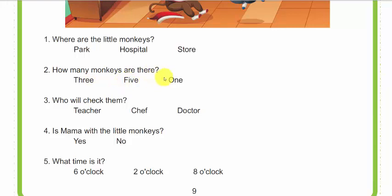Number three: Who will check them? Teacher, chef, or doctor? Number four: Is mama with the little monkeys? Yes or no? And number five: What time is it? Six o'clock, two o'clock, or eight o'clock?